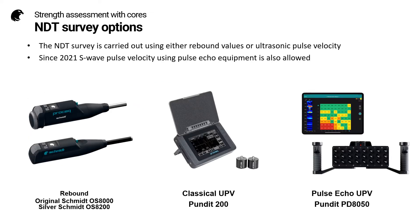The NDT survey is carried out using either rebound values or ultrasonic pulse velocity. Here you can see the ProSec rebound hammers and two types of instrument for measuring pulse velocity. Since 2021, the standard allows the use of pulse echo equipment for measuring pulse velocity. This method is much less labor intensive and requires access only from a single side. I would highly recommend visiting the Screening Eagle Technologies website to find out more information on this technology.